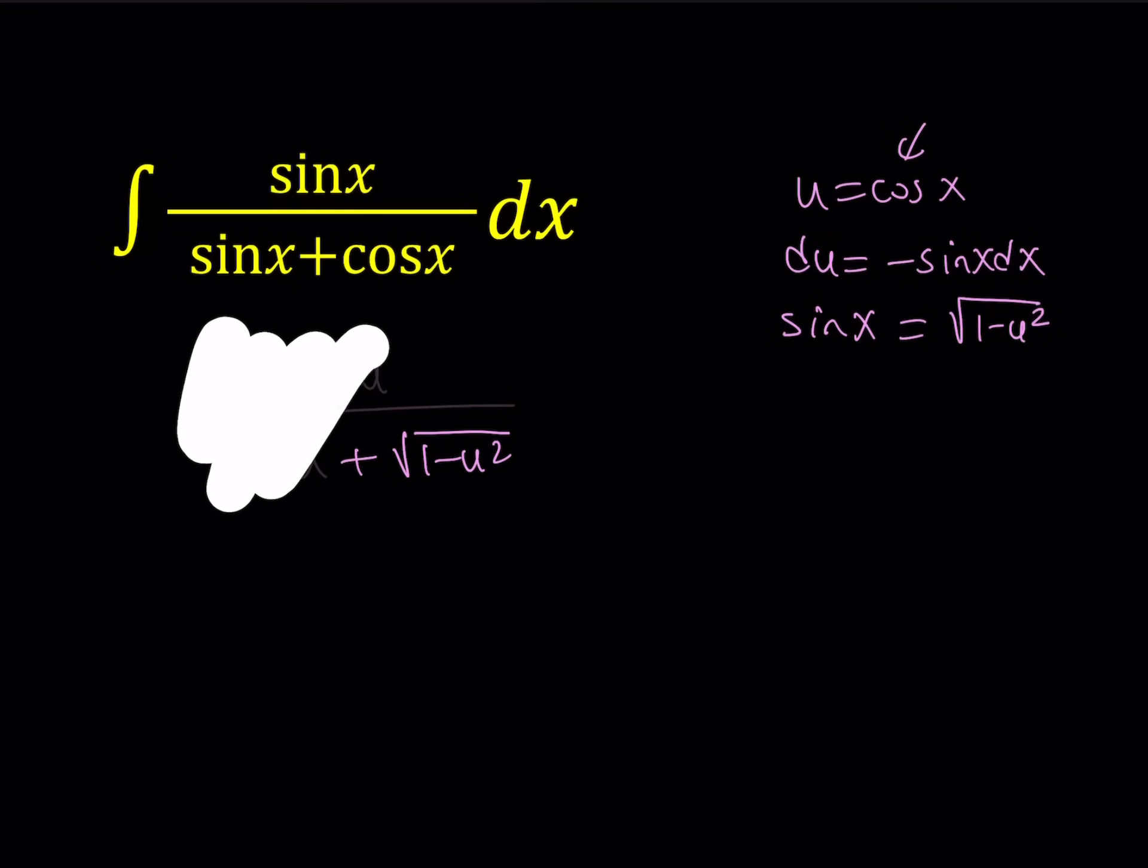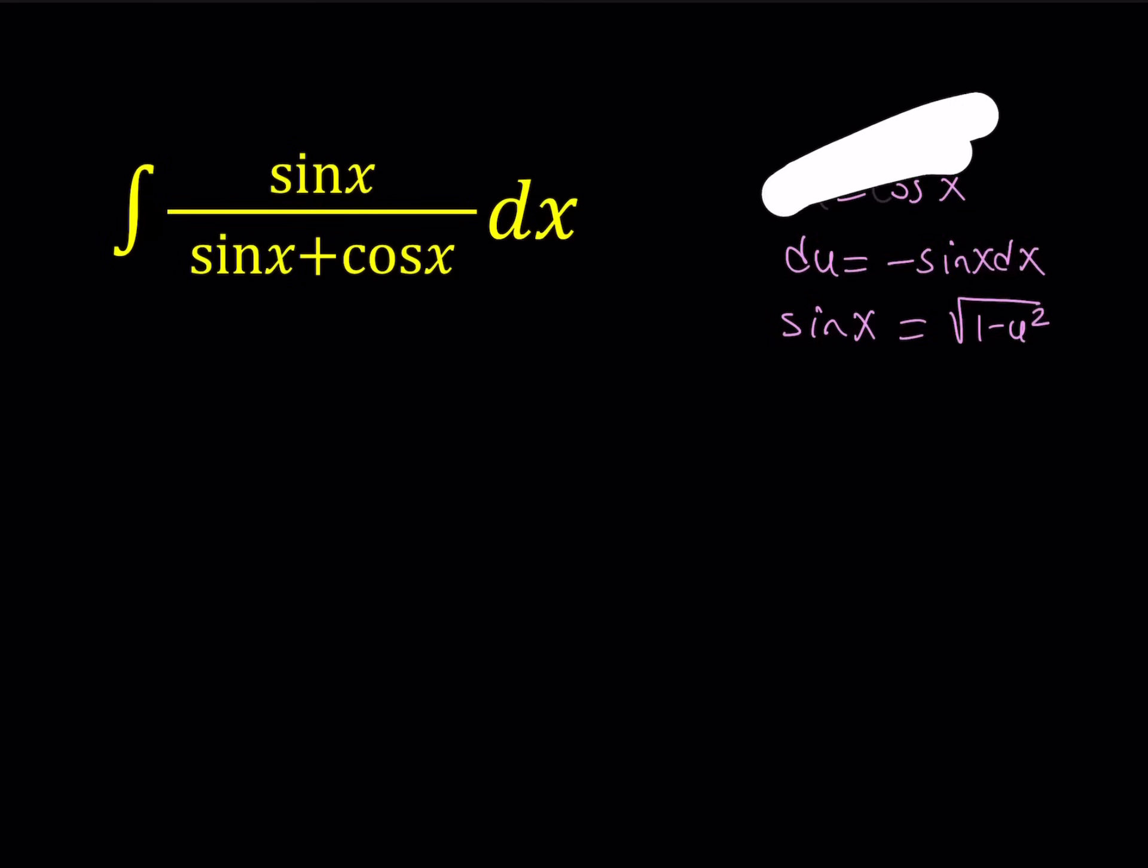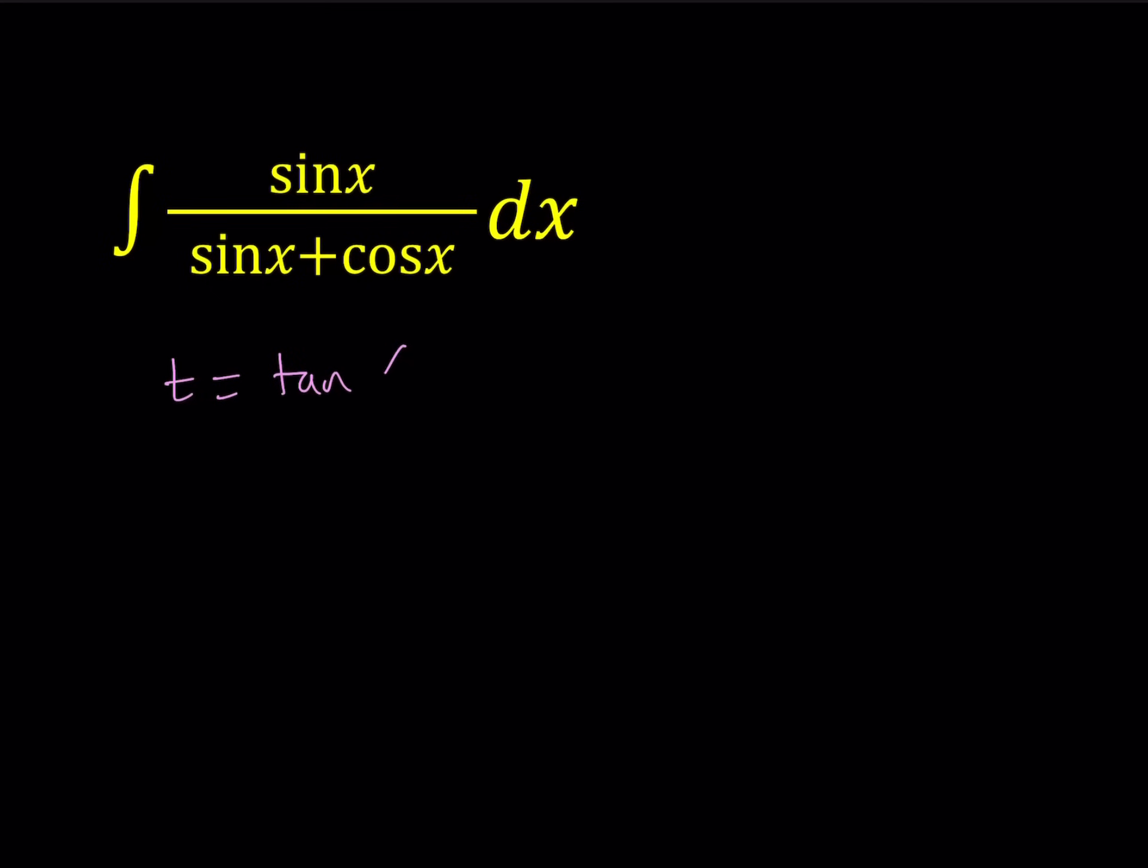Another approach might be to use the Weierstrass substitution. That is usually used with integrals of this kind where you have a function of sine x and cosine x, especially with rational expressions like this one. So we start by calling t equals tangent x over 2. And then from here we can evaluate x over 2 as tan inverse of t, and then multiply both sides by 2. And then from here we can find the dx as 2 dt over 1 plus t squared. And then you can draw a right triangle, find the sine x, cosine x, so on and so forth.